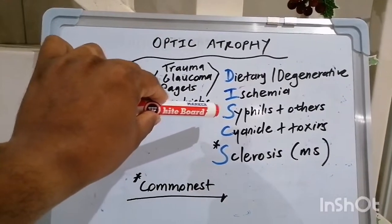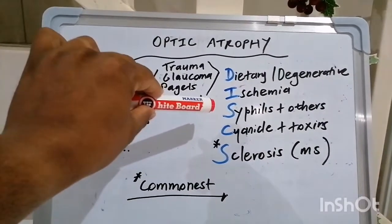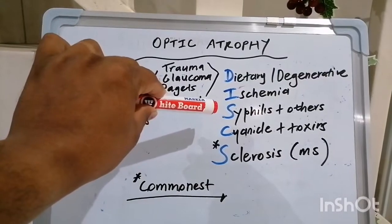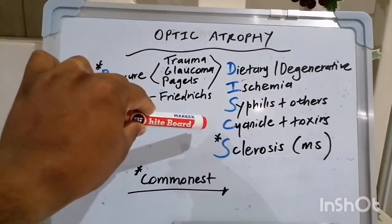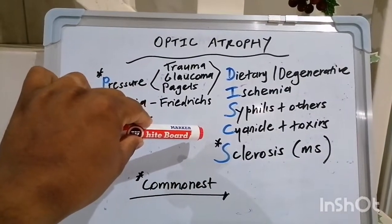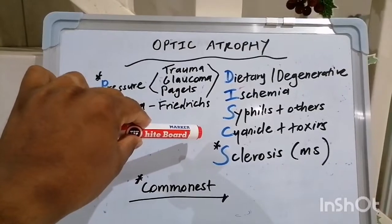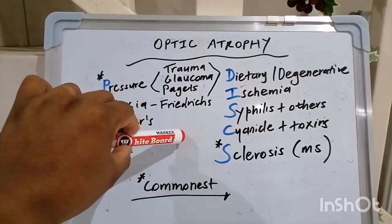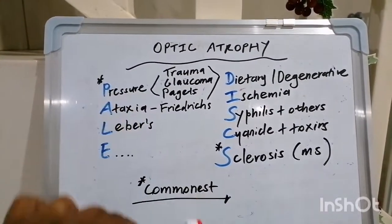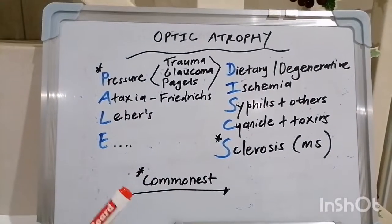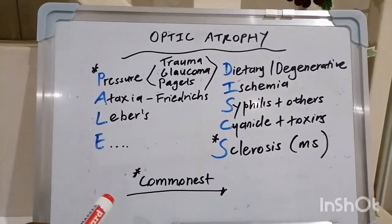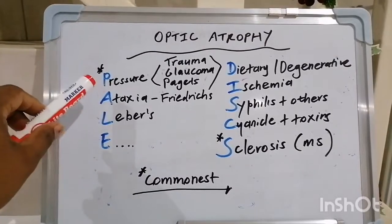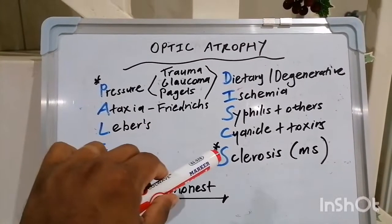C speaks to cyanide and other toxins like alcohol, lead, and tobacco, which can also cause optic atrophy. The second S is for sclerosis — multiple sclerosis. The most common causes of optic atrophy overall are intraocular pressure and multiple sclerosis.